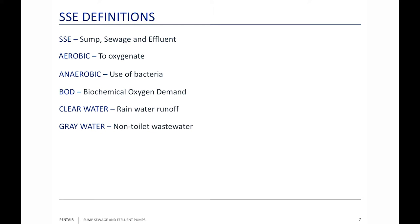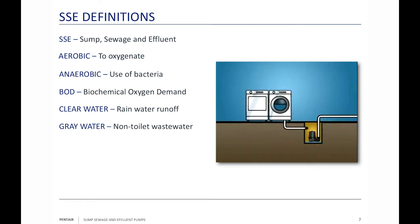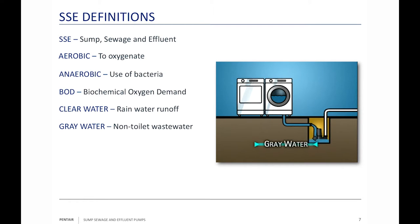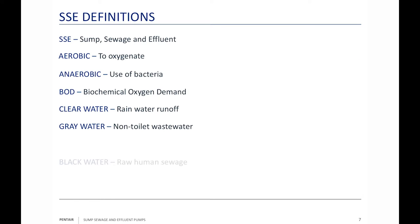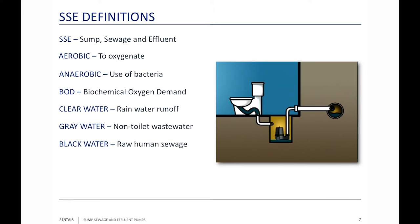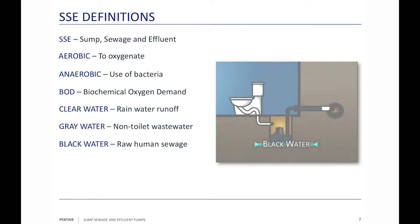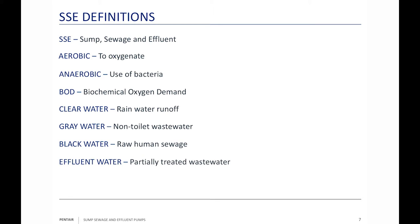Gray water is non-toilet water — if you take a shower, wash your dishes, or wash your clothes, those are non-toilet waters called gray water. Black water is raw human sewage: you go to the bathroom, flush the toilet, that's black water. The last type is effluent water, which is partially treated wastewater. We let the solids settle out and the soaps and oils float to the surface; what's between the scum on the surface and the sludge on the bottom is called effluent water.